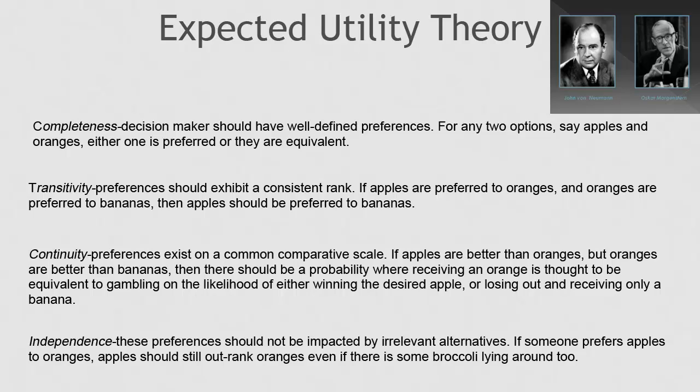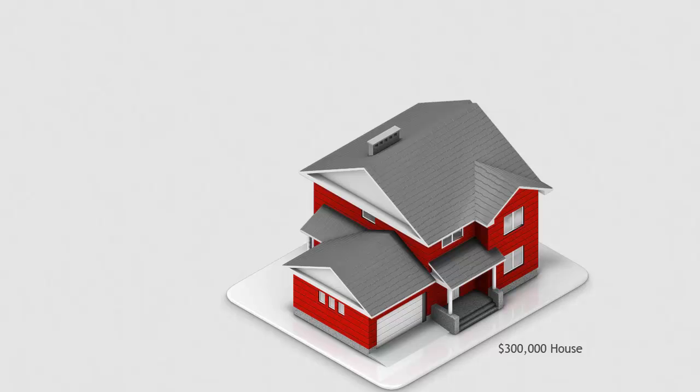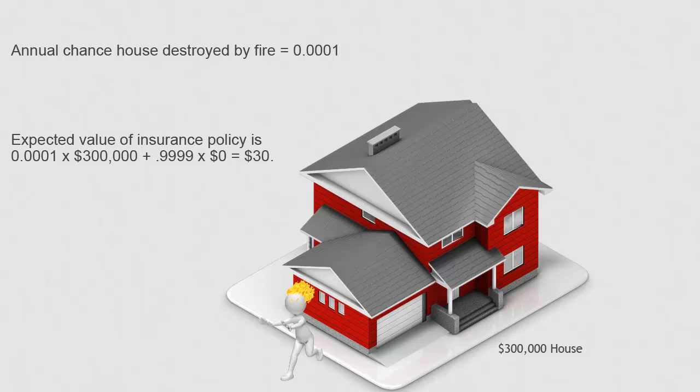You can think of the difference between expected value and expected utility as reflecting the value of non-monetary things. Consider home insurance as an example. Suppose the annual chance of your house being destroyed by fire is 1 in 10,000. But if it is destroyed, you lose $300,000. The expected value of the insurance policy is 1 in 10,000 times $300,000 plus 0.9999 times 0, which is equal to $30. So if you can get fire insurance for $30 or less, it's a good deal.